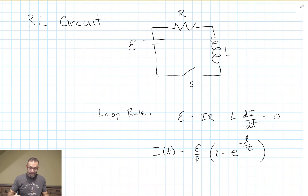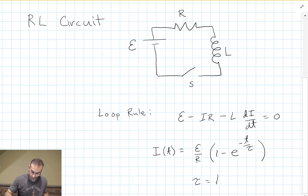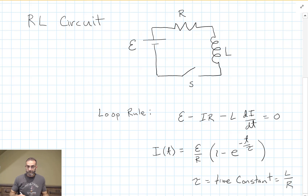The time constant is a little different for an inductor. For an inductor, tau is L over R.